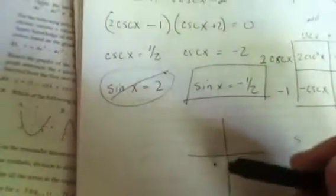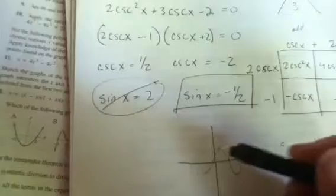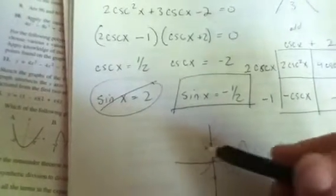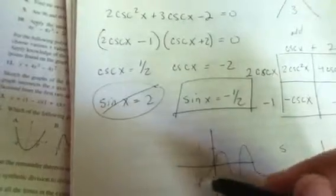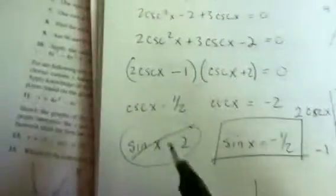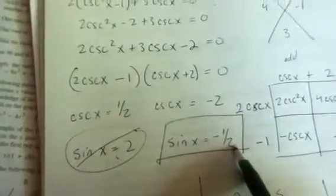You know how it goes, sorry, I can't draw and hold this camera at the same time, but you know how the sine function goes between 1 and negative 1. 2's not going to work, there's not going to be an angle for 2, but there's an angle for negative half.